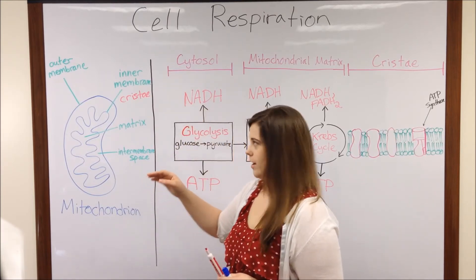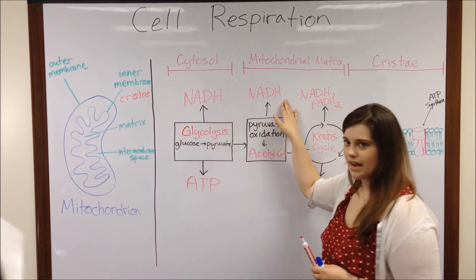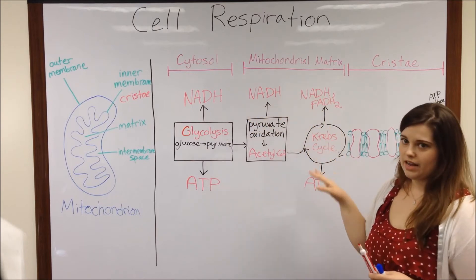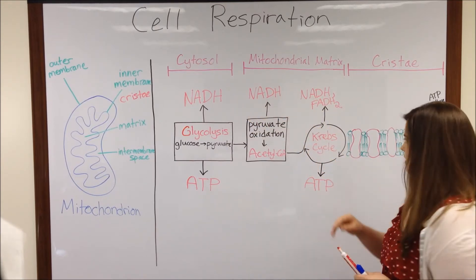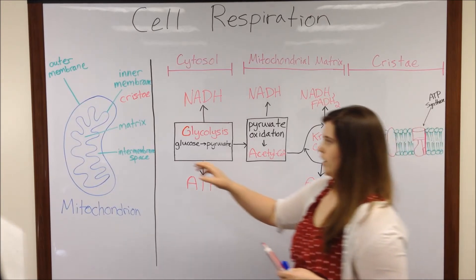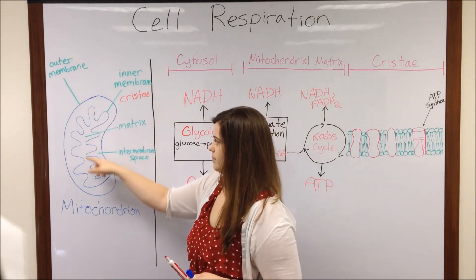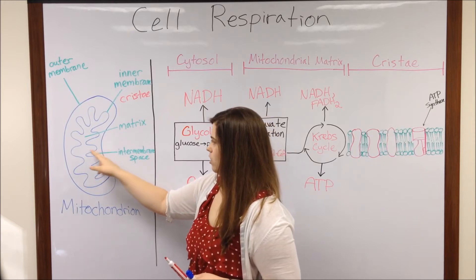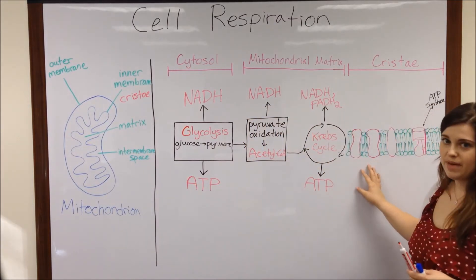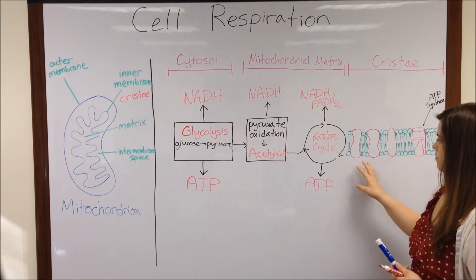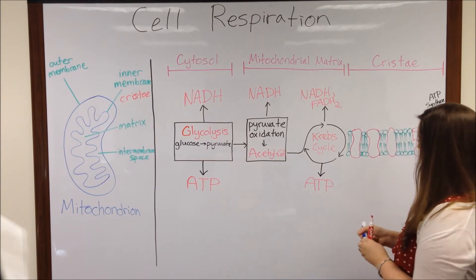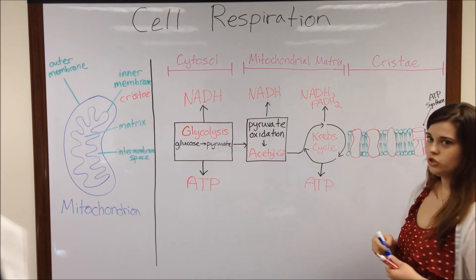Now, we've talked a lot about electron carriers. We have NADH from glycolysis, another NADH from pyruvate oxidation, and NADH and FADH2 molecules from the Krebs cycle. All of these various electron carriers are going to move to something called the electron transport chain. The electron transport chain is made up of several enzymes that are embedded within the cristae of the mitochondria. This inner membrane with all of these folds results in a large amount of surface area, so that a mitochondrion can contain many, many electron transport chains. The purpose of these electron transport chains is that these electron carriers come to this chain and give it their high energy electrons, which are then passed down the chain to multiple different enzymes.